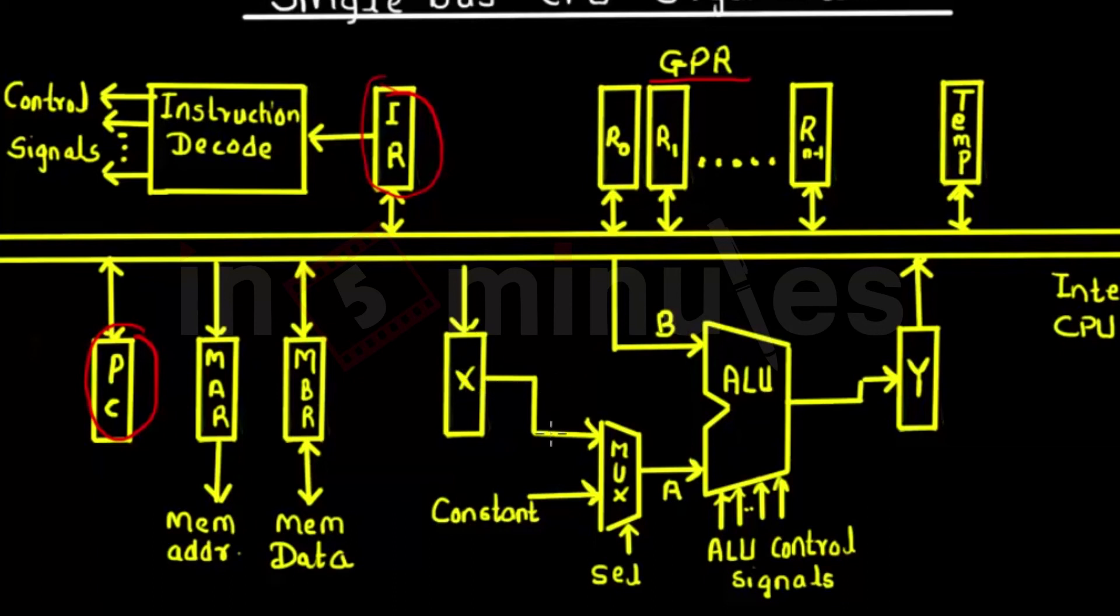For instruction fetch stage, the ALU is going to compute its next value. These operations we are going to see later on in individual cycles, but I hope you understood the role of the multiplexer and the X register here.